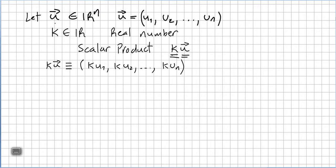Let u be a vector in Rn, so it will have n components: u1, u2, u3, up to un. And let k be a fixed real number. In the context of vector spaces and vectors, we call this number a scalar.